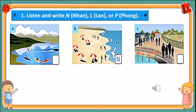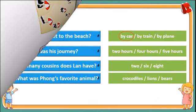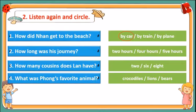Now let's check the answers. We move on to Task 2 — listen again and circle. Question 1: How did Nhân get to the beach? By car, by train, or by plane? Question 2: How long was his journey — 2 hours, 4 hours, or 5 hours?